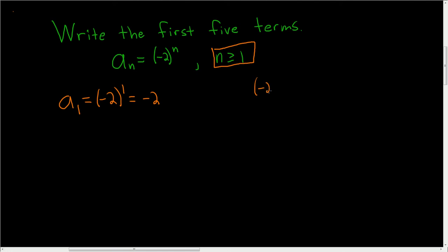Now negative 2 to the n can be written as negative 1 times 2, and the whole thing to the nth power. And then you can use the properties of exponents to write this as negative 1 to the n times 2 to the n.